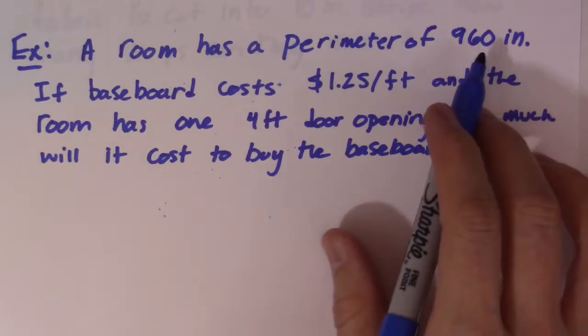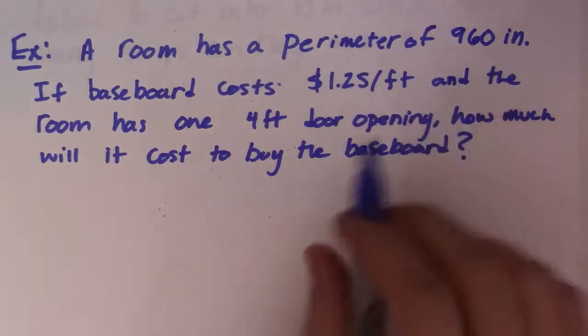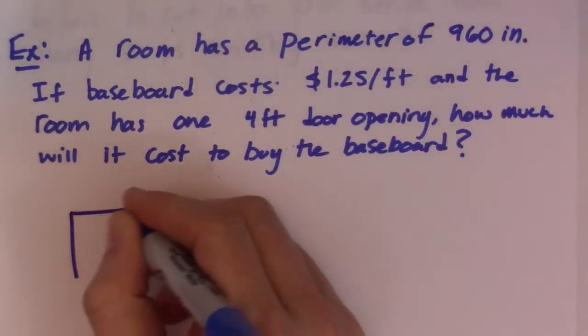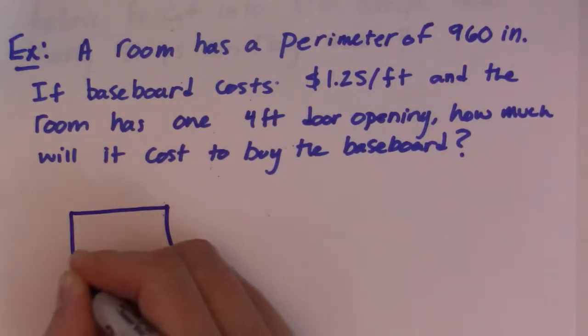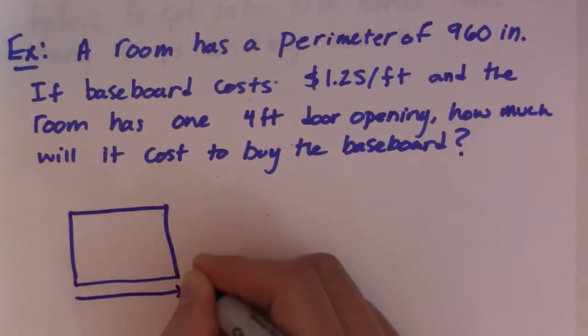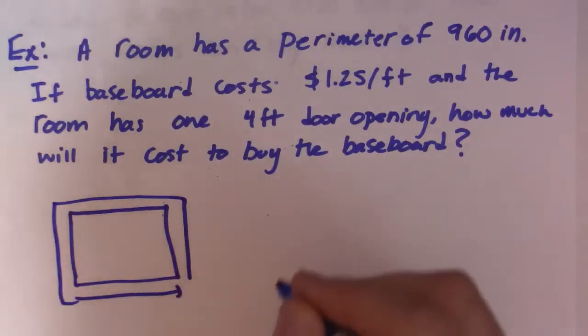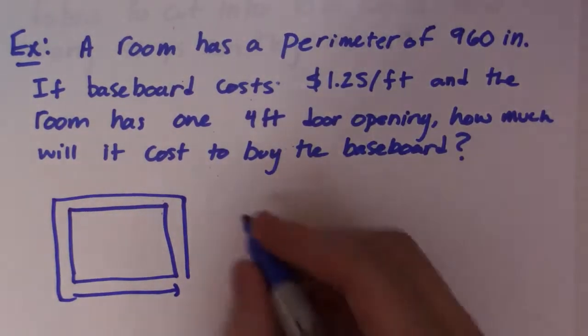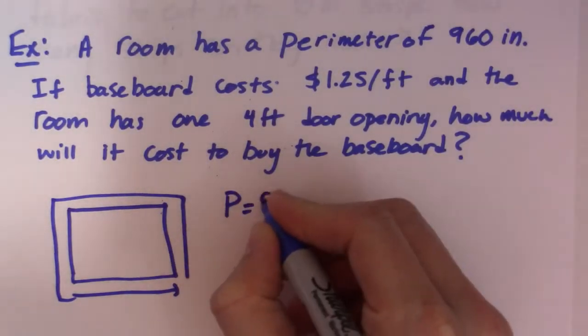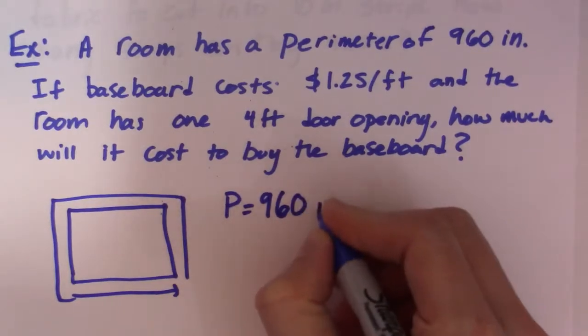First of all, we need to recognize that the perimeter we're given is the entire distance around the room. All the way around the room, that's the perimeter. So that perimeter is equal to 960 inches.